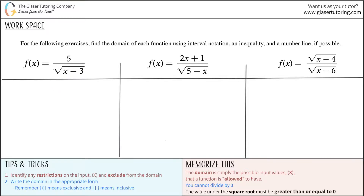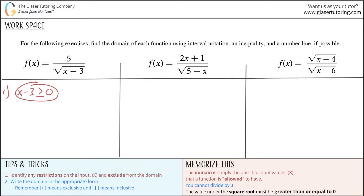We realize that there are two important restrictions going on here. Number one, we have a square root here, and we know that you can only take the square root of a positive value. That being the case, the first restriction is that whatever is under the radical, namely x minus three, must be greater than or equal to zero. You can take the square root of zero, and you can also take the square root of any positive value you want. So this would be the appropriate way to set up that first limitation.